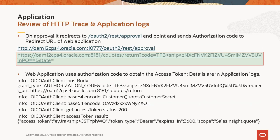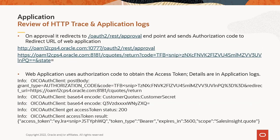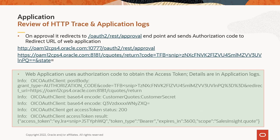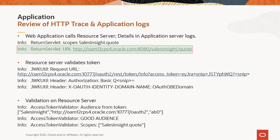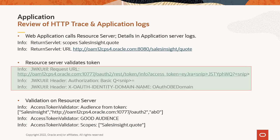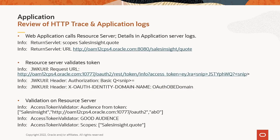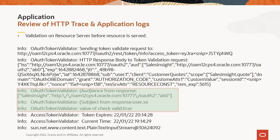On successful consent, OAM redirects to the web application with the authorization code. The next set of details are available in the application logs. The web application uses the authorization code, redirect URI, client ID, and secret to get the access token from the OAM REST token endpoint. It gets the access token from OAM. The web application then calls the resource server directly on the URL seen in the slide. Resource server validation takes place by calling the OAM REST token info endpoint. Additional checks performed by the resource server are shown in the logs. Once all validations are complete, the resource server provides access to the protected resource to the client.